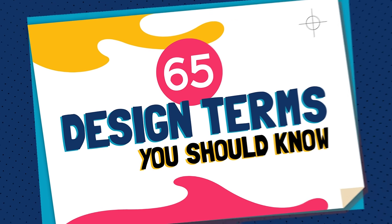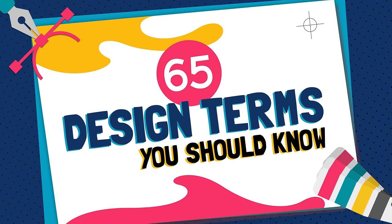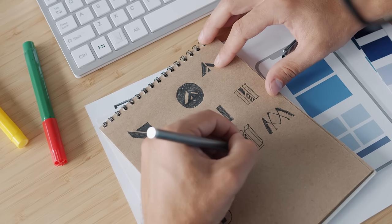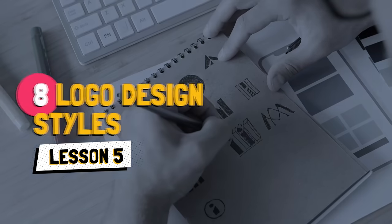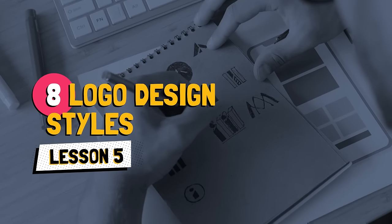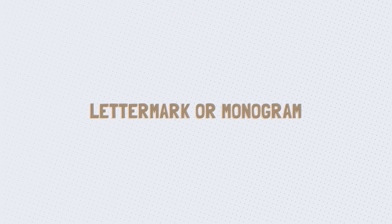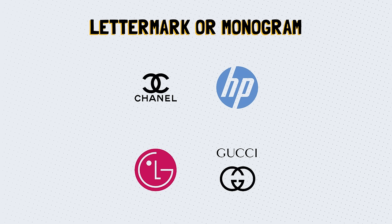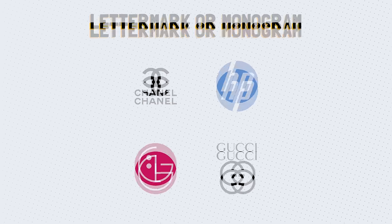Hi there and welcome back to this course, 65 Design Terms You Should Know. There are several different styles of logos, each with its own purpose and strength. In this lesson, we will go through the eight logo design styles you need to know. A lettermark or monogram is a type-based logo made of a few letters, often used if a company's name is made of two or more words. It shortens the company name by using only its initials, resulting in simplicity.